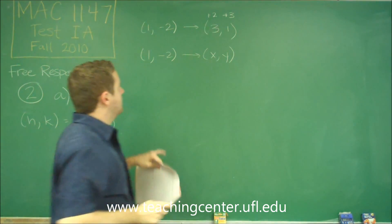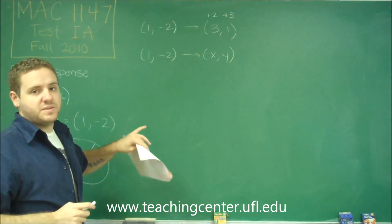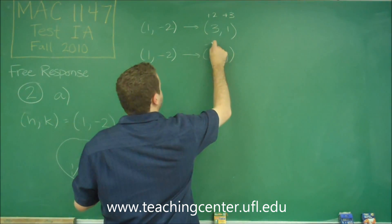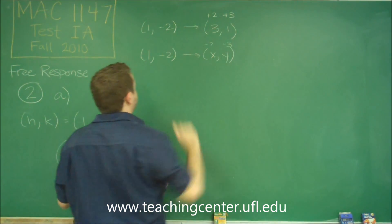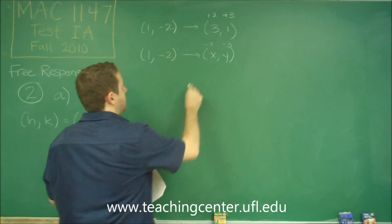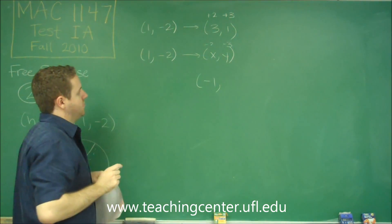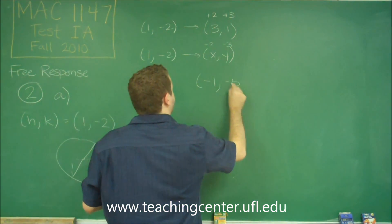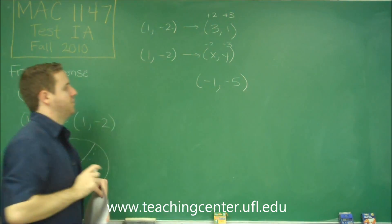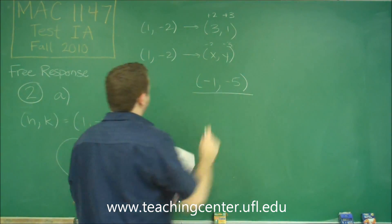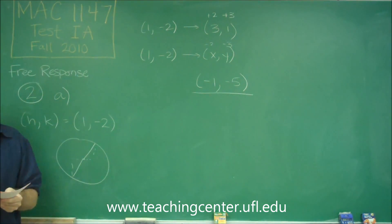So to get to the other end of our diameter, we would have to start at the center and do the opposite. So we'd have to go left 2 and down 3. So that would give us -1 by subtracting 2 from that, -5 by subtracting 3 from our y coordinate. And that would be the other end of that diameter.